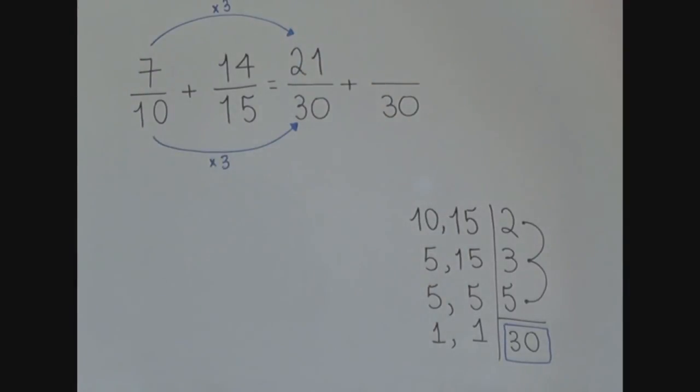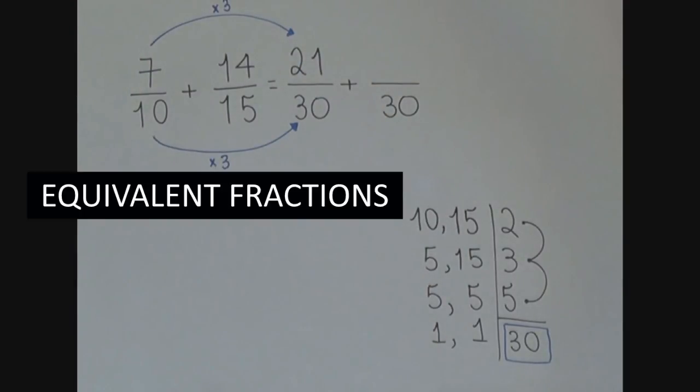That's how it works. To get an equivalent fraction, you multiply the numerator and the numerator by the same number. So, we can say that 7 over 10 is a fraction equivalent to 21 over 30.